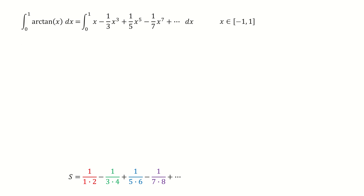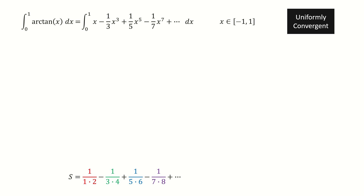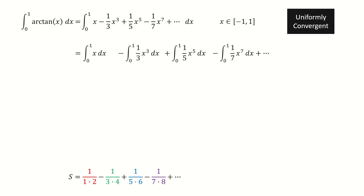Next, we take the integration on both sides. Because the series is uniformly convergent on this interval, we can interchange the sum and integral. So we can do the integration term by term.